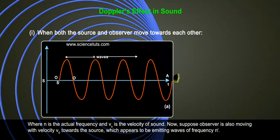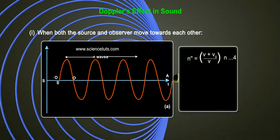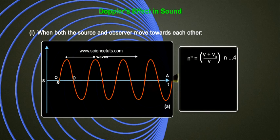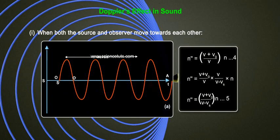Now suppose the observer is also moving with velocity v₀ towards the source, which appears to be emitting waves of frequency n' due to its motion. Then n' changes to n'', which according to Equation 1 is given by n'' = ((v + v₀) / v) × n' — Equation 4. From Equations 3 and 4 we get n'' = ((v + v₀) / v) × (v / (v - vs)) × n = (v + v₀) / (v - vs) × n.